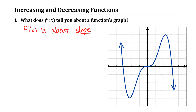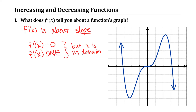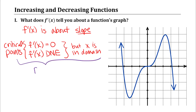Everything we're going to talk about with respect to the first derivative is really related to the ideas of slope. There are three different important things to think about with slope. First, at places where the first derivative is equal to zero or does not exist, but where x is in the domain of the function, are called critical points, or critical values if we're just talking about the x-coordinates. Those are the possible locations of local or absolute extrema.